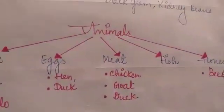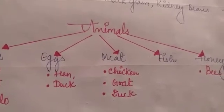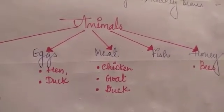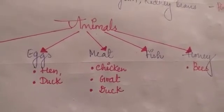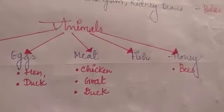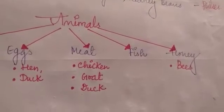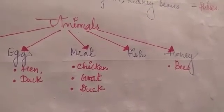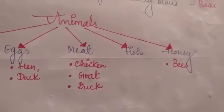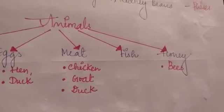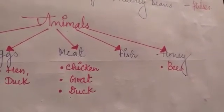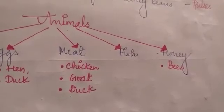Moving to eggs — hens and ducks lay eggs. We eat the meat of duck, goat and chicken. Next is fish; commonly, people residing in coastal areas feed upon fish. Next is honey: bees collect nectar from flowers and convert it into a thick liquid called honey.